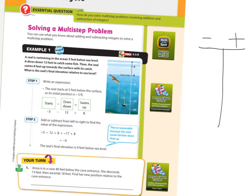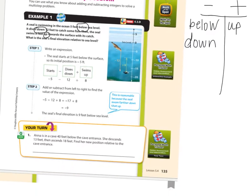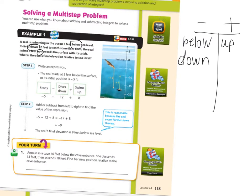Number one, a seal is swimming in the ocean five feet below sea level. Is that a negative word or a positive word? Below is negative. It dives down. Down. And then it swims up. So those are all of the words that we found that have positive and negative meanings to them.